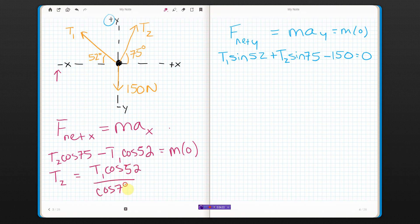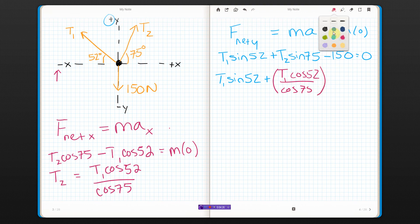T1 sine 52 over cosine 75. That's what comes up. And I'm going to put that up over here. So T1 sine 52 plus T1 sine 52, I got T1 cosine 52 over cosine 75. I still got this sine 75 here. Don't forget it. Minus 150 equals zero. Well, that's a lot of stuff.